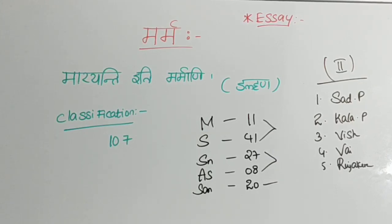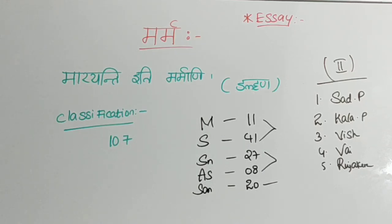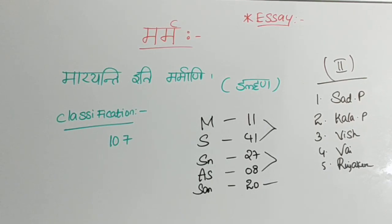Survival period — this is the most important thing regarding this classification. In the case of Sadya Pranahara Marma, death occurs within a week. In the case of Kalanthara Pranahara Marma, death occurs within 15 days or within one month. Shephara Marma will be seen next — if it causes...